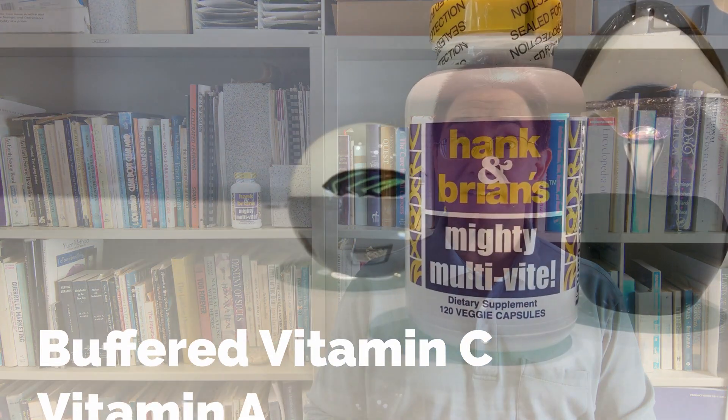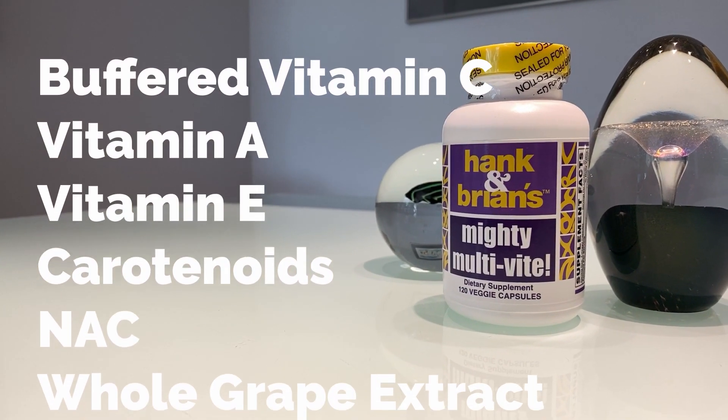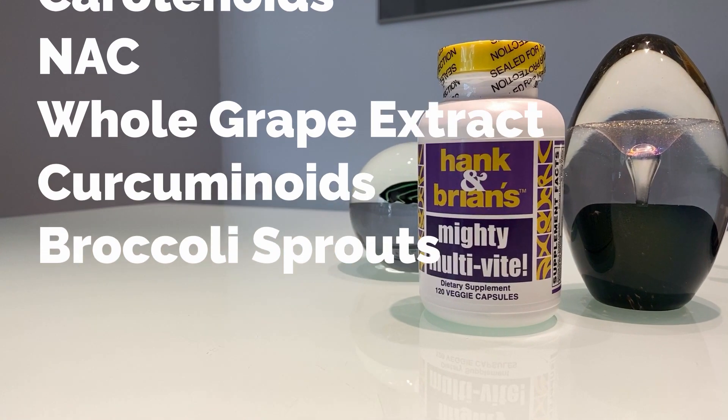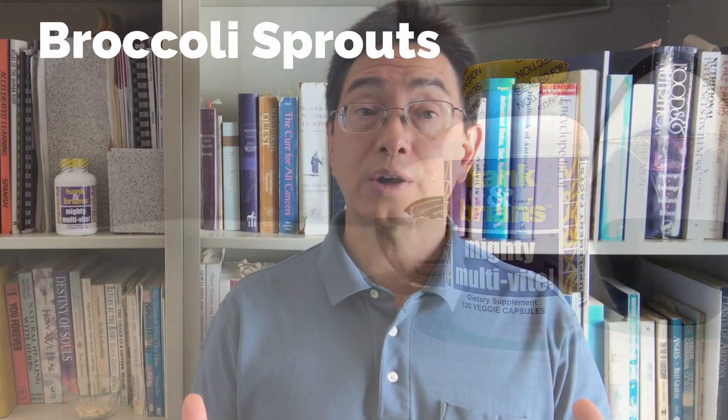I'm going to briefly talk about the antioxidants and Nrf2 activators in the formula. This covers things like buffered vitamin C, vitamin A, vitamin E, the carotenoids, NAC or N-acetyl cysteine, whole grape extract, curcuminoids, and broccoli sprouts. These also fall into different categories. This is a separate category we're considering: antioxidants and Nrf2 activators. This group of nutrients and plant-based substances has the ability to quench free radicals, and the Nrf2 activator component can go into your cells and tell them to make their own antioxidants.